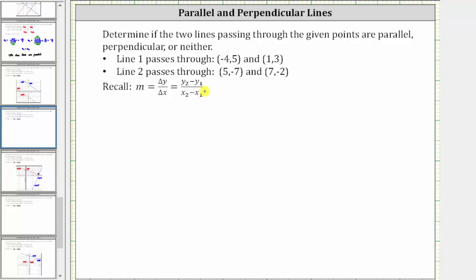So for the first line, to keep things organized, let's let the first ordered pair be x sub one comma y sub one, and the second ordered pair be x sub two comma y sub two. And we'll call the slope of the first line m sub one.